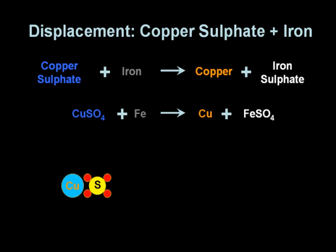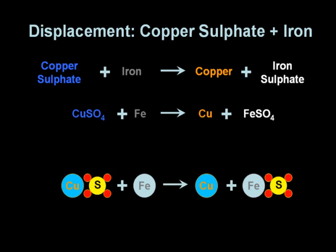And it is also worth thinking about the particles that are involved in the reaction. Here you can see copper sulphate on the left hand side with the iron and on the right hand side we can see copper and iron sulphate.